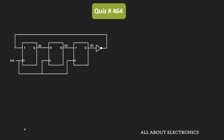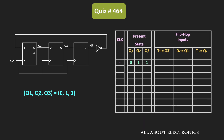So as it is given in the question, the initial value of Q1, Q2, and Q3 is equal to 011. The output of Q3 is given back to the first flip-flop via the NOR gate. That means T1 is equal to Q3'. And as you can see, the output of the first and the second flip-flop are directly given to the next stage. That means D2 is equal to Q1, and T3 is equal to Q2.